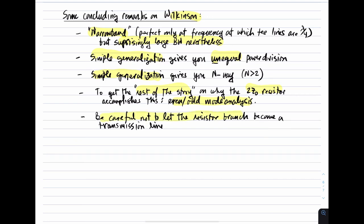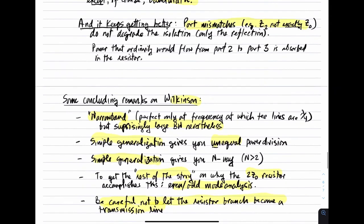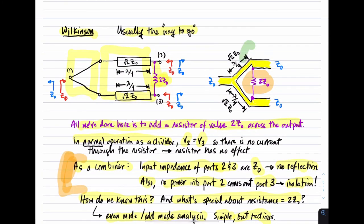Finally, be careful not to let the resistor branch become a transmission line. If the length of the resistor path is comparable to a quarter wavelength, then it acts as a transmission line and that will ruin the design. Any practical Wilkinson structure will have the transmission lines come in at a very small angle, so that the resistor is on a path which is very short. There are other schemes to minimize that distance. This is an important consideration and one of the things that complicates Wilkinson design. This concludes this lecture on power dividers and combiners.